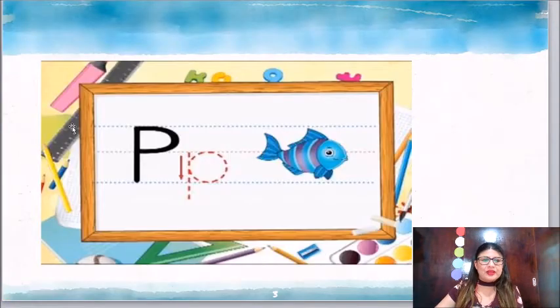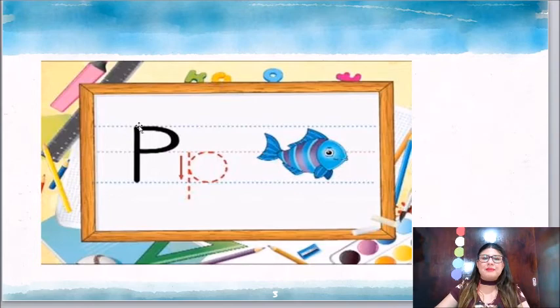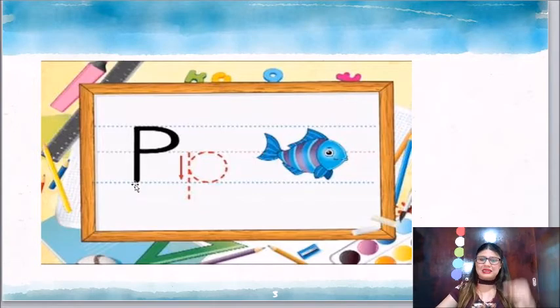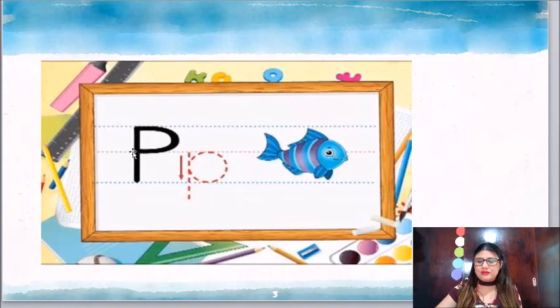Ahora, ¿recuerdas cómo debe de ser el trazo de tu letra P? Si no lo recuerdas, vamos a trabajarlo juntos. La P comienza con un palito muy derechito que se escribe de arriba hacia abajo. Ya que formé mi palito, lo que tengo que hacer es un semicírculo para formar lo que sería su cabecita.